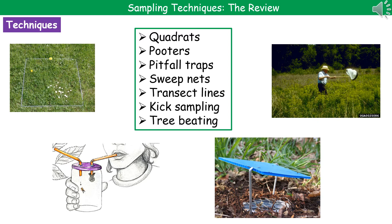Pooters, in the bottom left, are used to collect small invertebrates so that we can then identify them and count them later. Pitfall traps, in the bottom right, are a jar buried underground to catch anything walking along the ground.